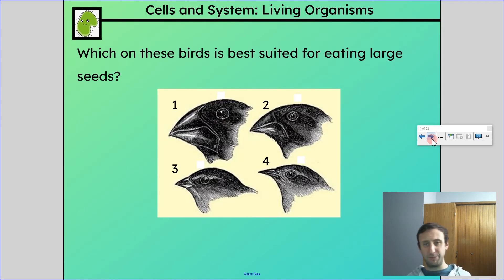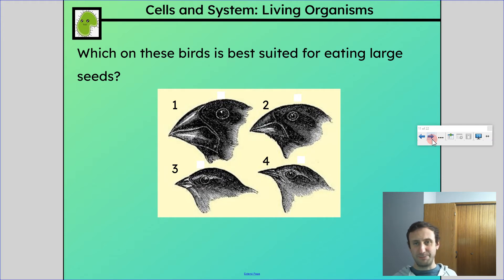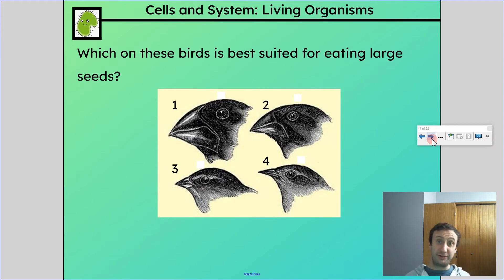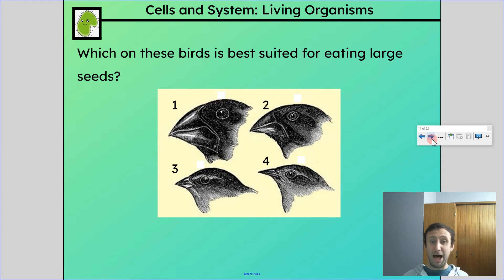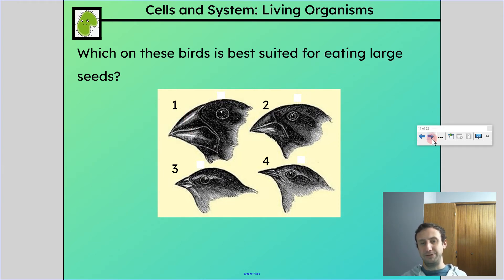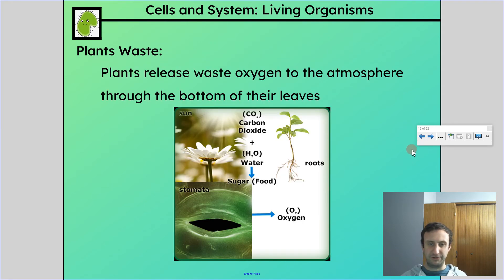Here's an example of adaptation. Looking at these four birds, which one do you think is best suited for eating larger seeds? Number one — it's got a larger beak, so it's probably better able to crush those large seeds.